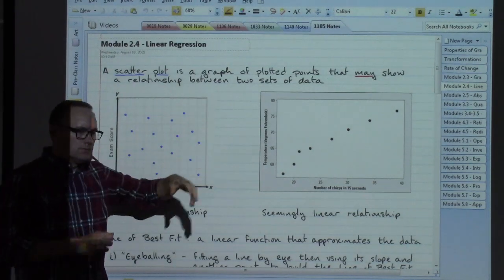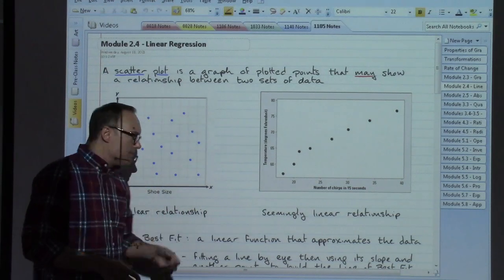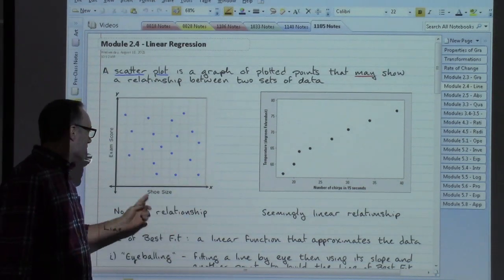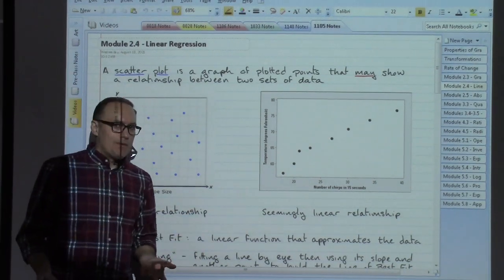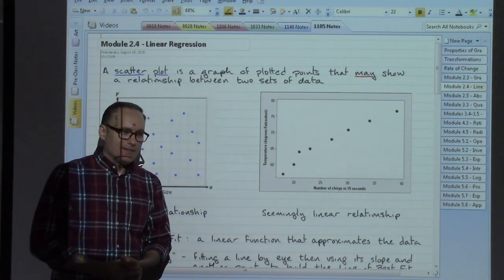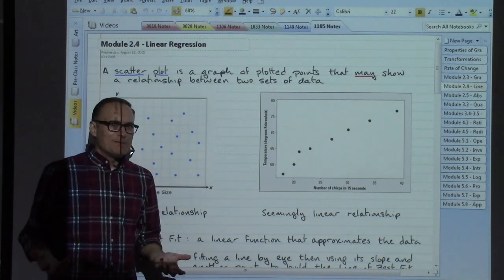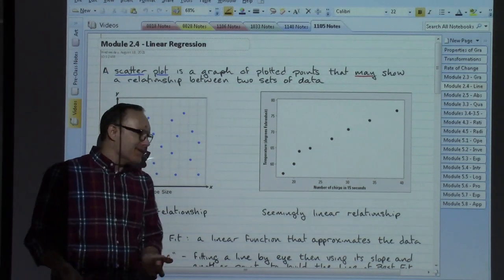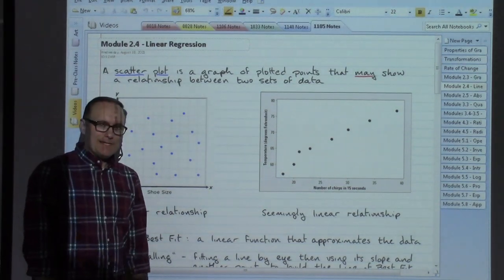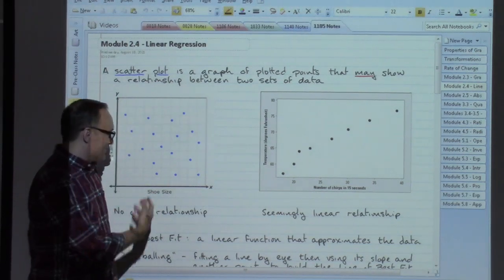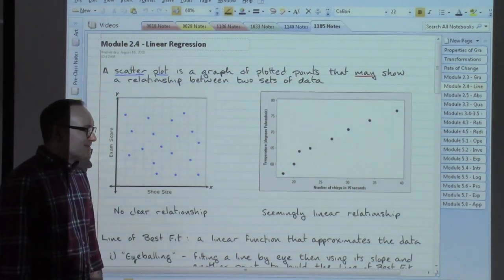We've got a bunch of data values that are paired up. We can plot them out. For instance, shoe size versus exam score. And you might understandably expect that's weird. There doesn't seem to be any sort of relationship that I could think of between shoe size and exam score. And our data points certainly show us that there does not seem to be a clear relationship between those.